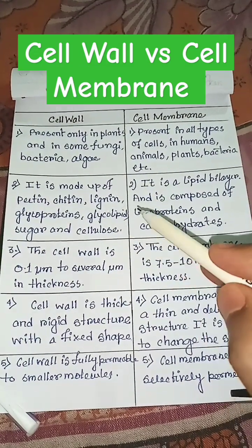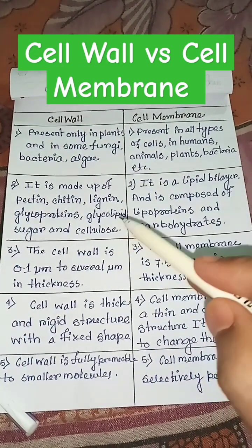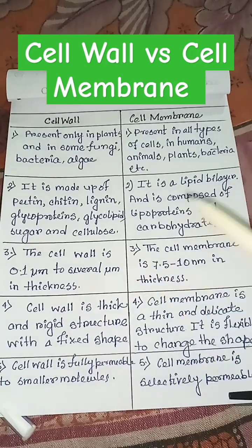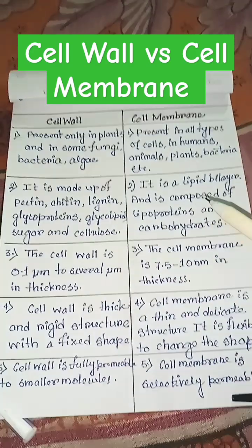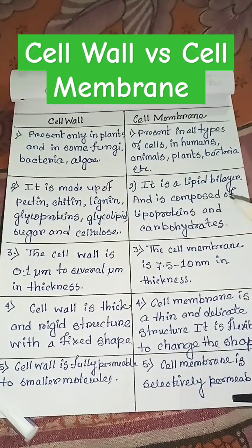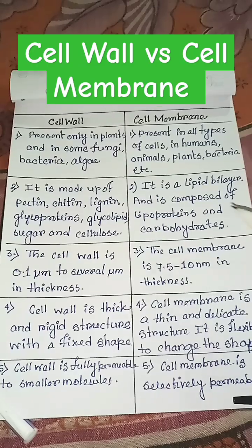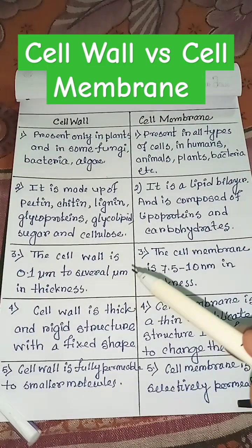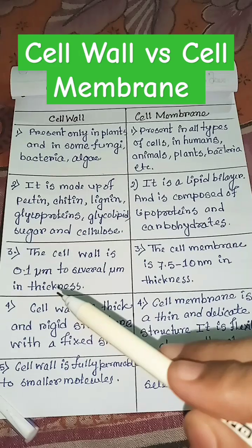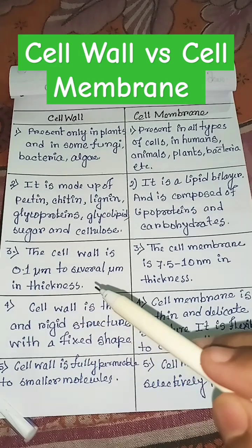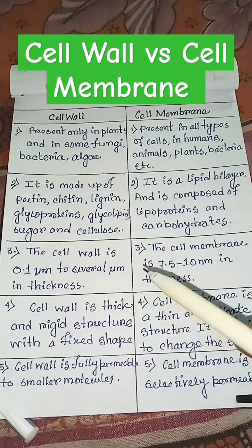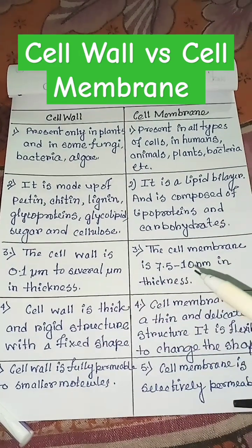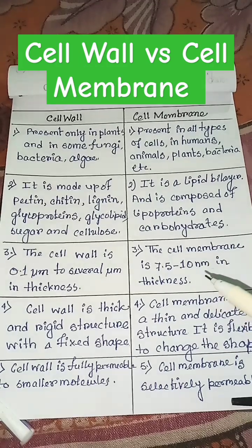The cell wall is made up of pectin, chitin, lignin, glycoproteins, glycolipids, sugar, and cellulose. But the cell membrane is a lipid bilayer and is composed of lipoproteins and carbohydrates.